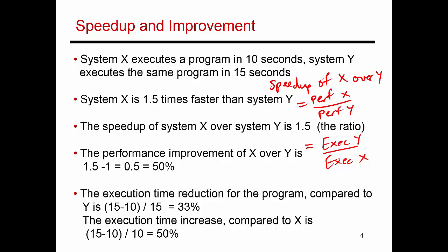So plugging those values into these equations, you can say that system x is 1.5 times faster than system y. Or stated differently, the speedup of system x over system y is 1.5. Another way of expressing this is as a percentage performance improvement. And that is nothing but the speedup minus 1. So the performance improvement of x over y is actually performance x minus performance y divided by performance y.